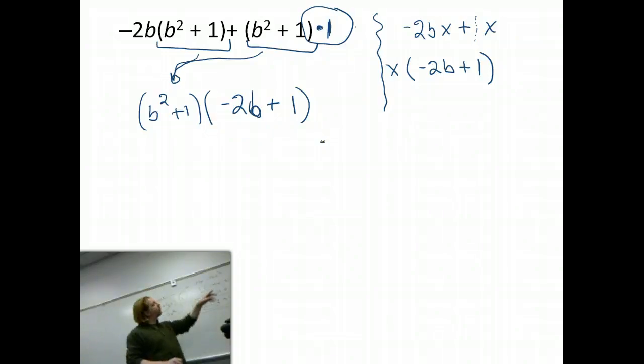Right. There's always an assumed times one. Same reason when I wrote the analogy of thinking of that b squared plus one as just x. When I pull the x out, it would leave one. Because there's one x.